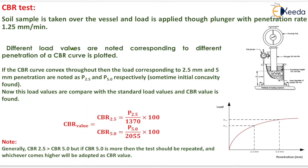Now this load values are compared with the standard load values and CBR value is found. Now CBR value can be determined by using the formula that is CBR for 2.5 mm penetration will be equals to load at 2.5 mm penetration divided by the standard load that is 1370 into 100. For 5 mm penetration the CBR value will be equals to load at 5 mm penetration divided by 2055 that is the standard load into 100. Note CBR for 2.5 mm penetration should be greater than CBR for 5 mm penetration but if CBR for 5 mm penetration is more than the CBR for 2.5 mm penetration the test should be repeated and whichever comes higher will be adopted as CBR value.